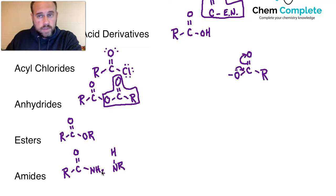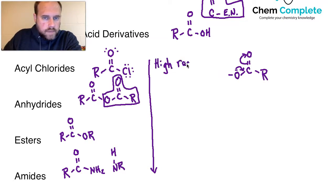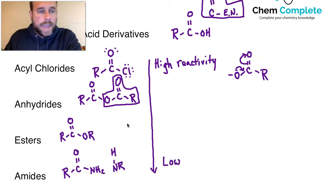Now I want to point out something else that's very important here, which is that when you look at this, there is a general trend for reactivity. This is going to be high reactivity. So acyl chlorides are going to be the most reactive. And then at the bottom of the list is going to be the lowest of the group as far as reactivity. So down here, the amides, that's going to be the low end of reactivity. So acyl chlorides will be the most reactive, anhydrides will be next, then esters, then amides.